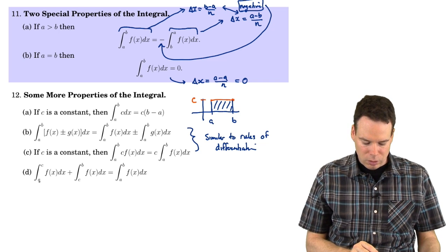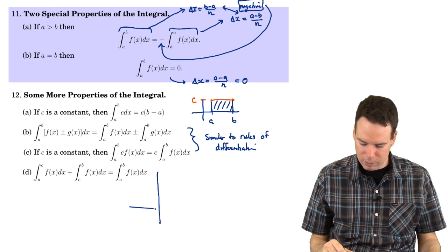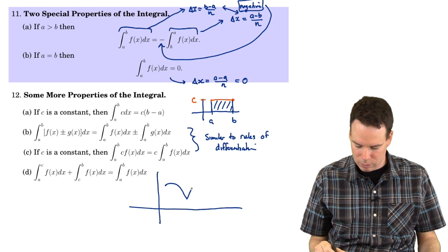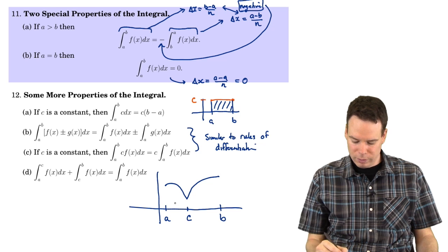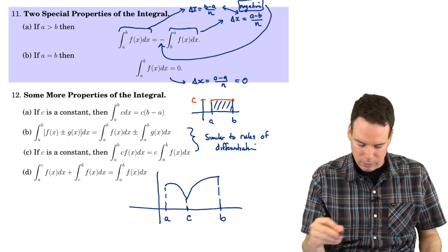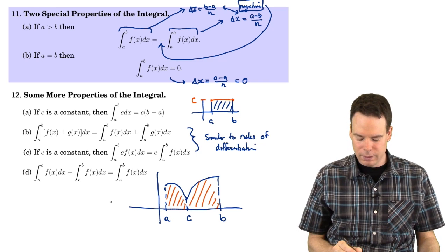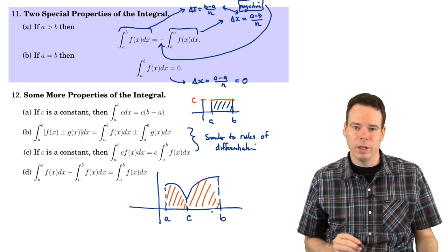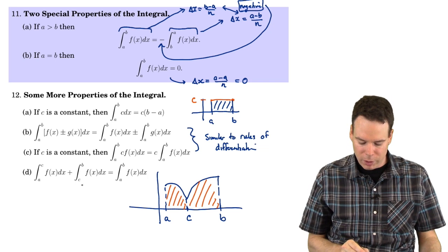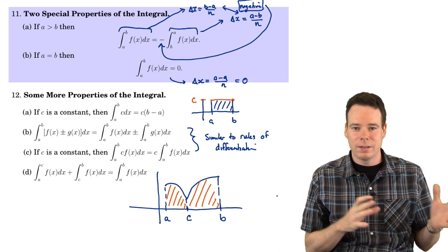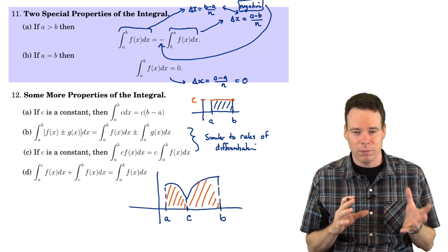The last property: the integral from a to c of f plus the integral from c to b of f equals the integral from a to b of f. This means that if you integrate from a to c and then from c to b and add those together, that's the same as integrating from a all the way to b. Notice that c does not have to sit between a and b — this property holds even when c is somewhere outside the interval.